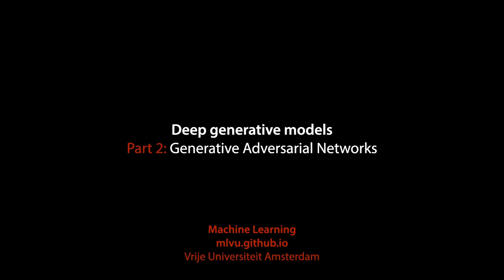In the last video, we defined generator networks, and we saw that they represent a very rich family of probability distributions. We also saw that training them can be a tricky business. In this video, we'll look at one approach: the method of generative adversarial networks.